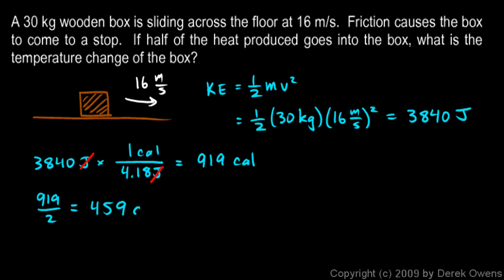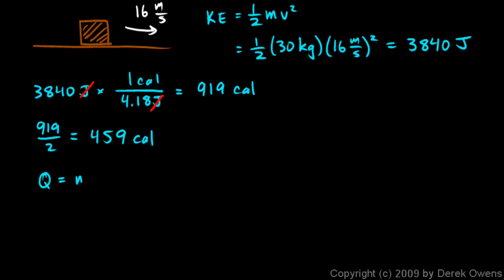We want to know the temperature change of the box. The equation is Q equals mc delta T, so we just need to solve for delta T, the temperature change. Delta T is equal to Q over mc.